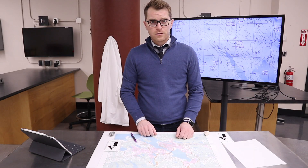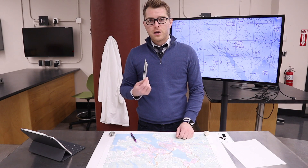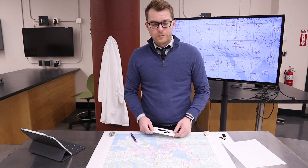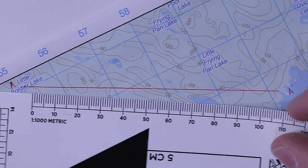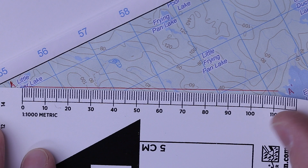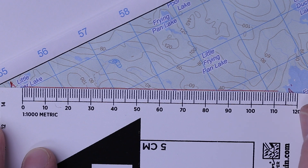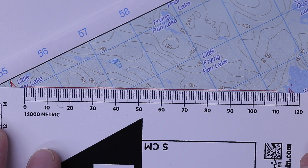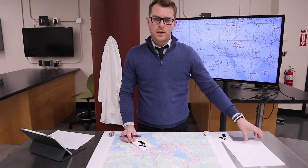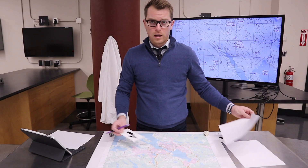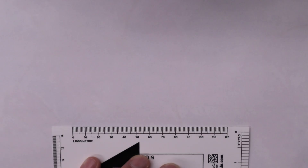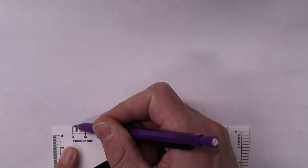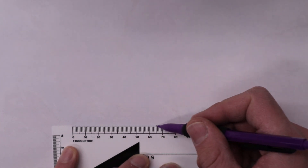The first step in constructing a topographic profile is to measure the physical distance on the map along our line of interest. So A at Little Soldier Lake to A' at East Lake is exactly 111 millimeters on our map. I then draw a horizontal line on one of my pieces of paper exactly 111 millimeters long.